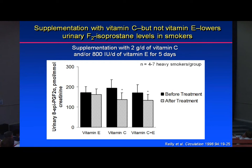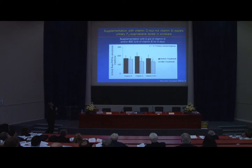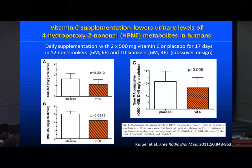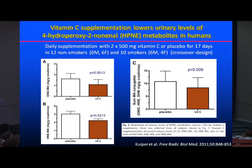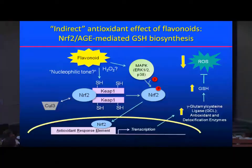In heavy smokers given 2 grams of vitamin C per day for five days, together with vitamin E, you can see that vitamin C alone as well as the E and C combination significantly reduces urinary F2-isoprostane levels, demonstrating an overall antioxidant effect. Similarly, at the Linus Pauling Institute, Fred Stevens developed a new assay for measuring lipid peroxidation in vivo using metabolites of 4-hydroperoxy-2-nonenal. In smokers given placebo versus vitamin C, there is again a very significant reduction in these markers of lipid peroxidation in vivo.